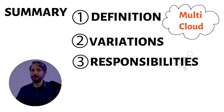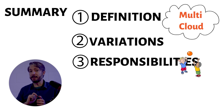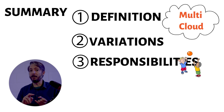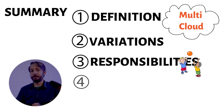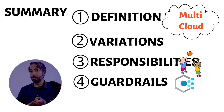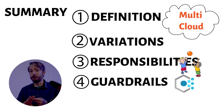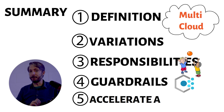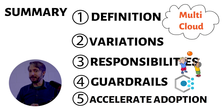Third, responsibilities: the primary responsibility of CCOE is to facilitate the smooth adoption of cloud technologies within the organization, involving setting up governance structures, defining policies, and removing barriers like legacy processes that may hinder cloud adoption. Fourth, guardrails and policies: CCOE establishes guardrails such as Azure policies to govern cloud usage, ensuring compliance, security, and efficient resource allocation. Fifth, accelerating adoption: the ultimate goal of CCOE is to accelerate cloud adoption by streamlining processes and removing internal obstacles like politics and bureaucracy.